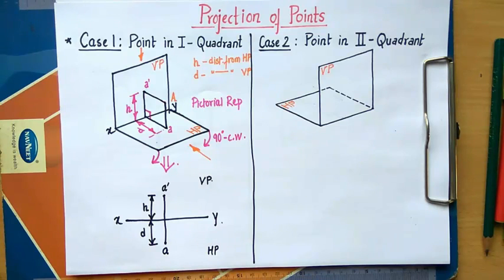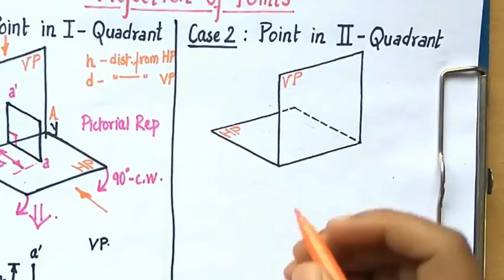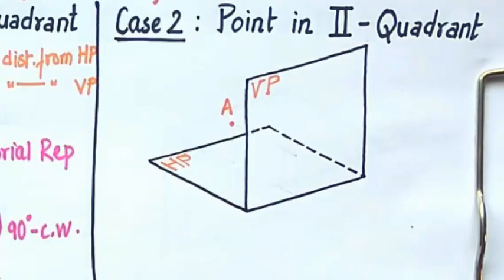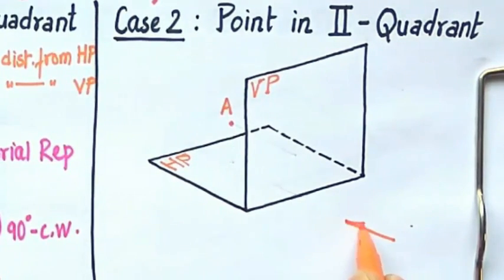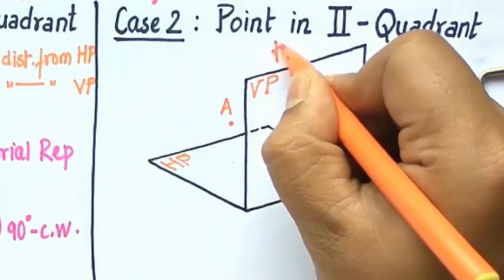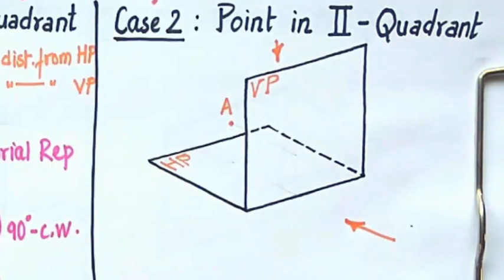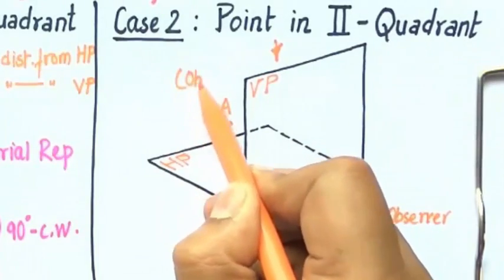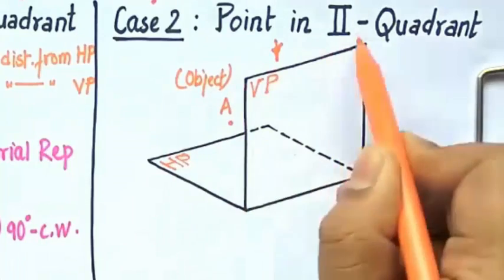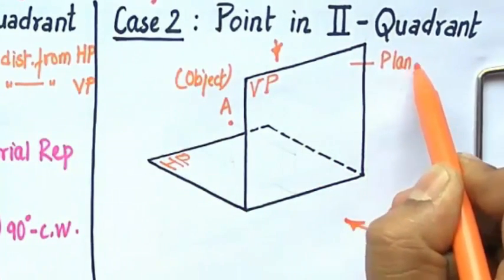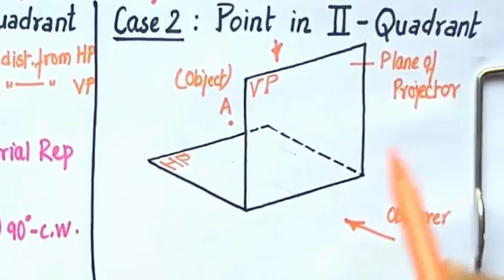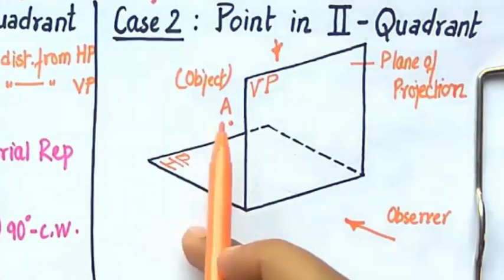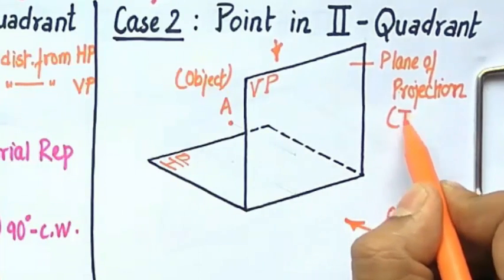That was all about the first quadrant. Now we're going to deal with case 2 — a point in the second quadrant. In this case, the point lies behind the vertical plane and above the horizontal plane. The problem is when you try to look at this object from the front, the vertical plane comes in between the observer and the object — it acts as a hindrance. So in order to see the object, you need to make this plane of projection transparent. This is a case which happens in quadrant number 2; in the first quadrant there was no such requirement.